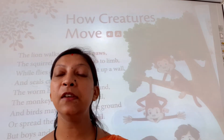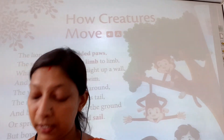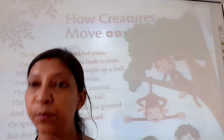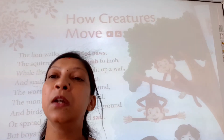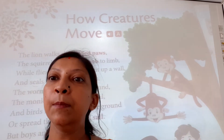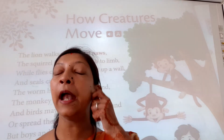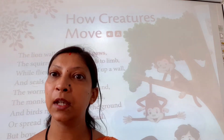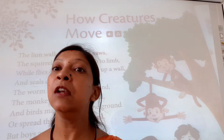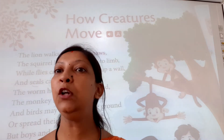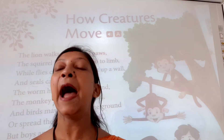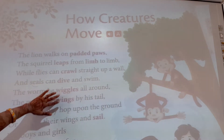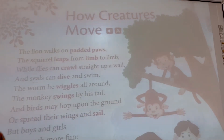So every creature moves in some or other way. In this poem, I'll teach you how the different creatures move. Now you must be thinking — what is a creature? A creature is an animal, and small insects also. Can you tell me how the birds move? Birds can fly. And how are we moving? We are walking. Now I'll teach you how the creatures move in this poem.